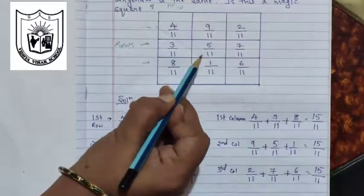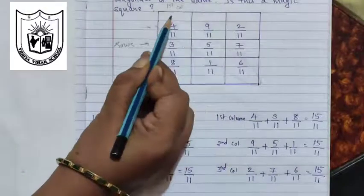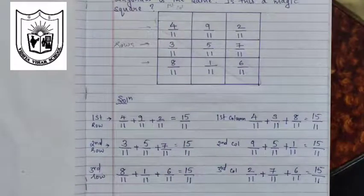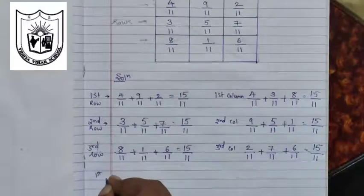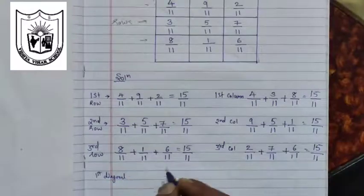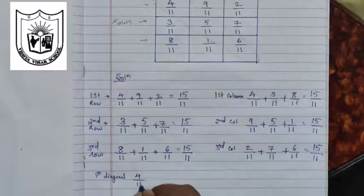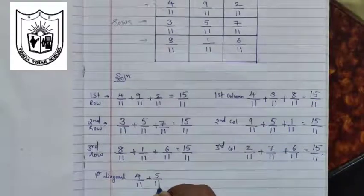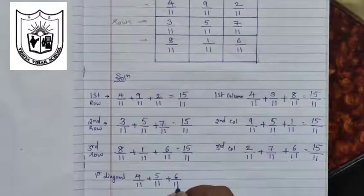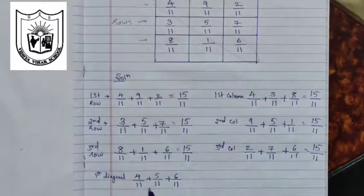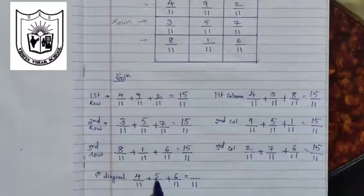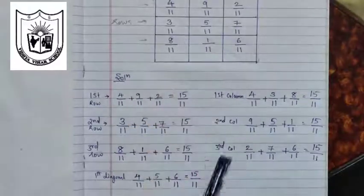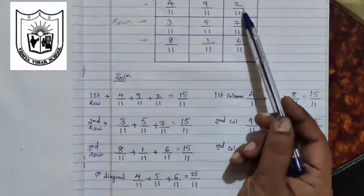Now let us check along the diagonals. From the left diagonal, we consider these three numbers. First diagonal, or the left diagonal: 4 upon 11 plus 5 upon 11 plus 6 upon 11. The denominator is common, so we write it once. 4 plus 5 is 9, plus 6 is 15. So even along the left diagonal we have got the same answer.